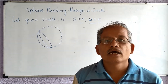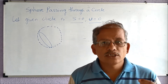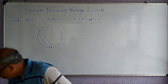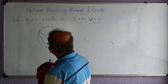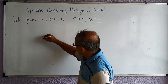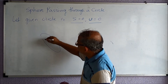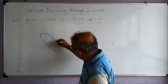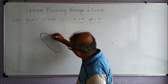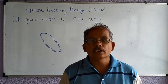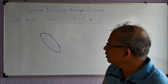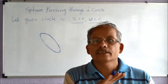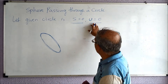Let me draw a circle here — this is a circle in three dimensions. This circle is obtained by taking some sphere S equal to zero and taking its intersection with a plane U equal to zero, and we obtain this circle.